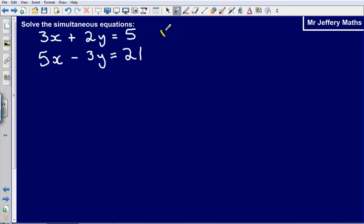So what I am going to do is I am going to multiply this top equation by 3 and I am going to multiply the bottom one by 2. When I do this what will happen is I will get the same coefficient for the y term.